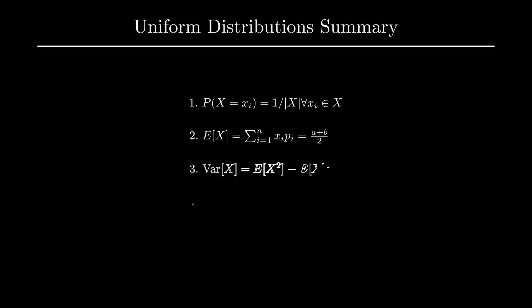To summarize, the probability of getting any outcome in a uniform distribution is equal to 1 over the total number of outcomes. The expected value and variance can be computed normally, or we can use the bounds trick to calculate the expected value more efficiently. Finally, we can compute probabilities of ranges on a uniform distribution by taking the ratio of the range to the total length of the distribution.